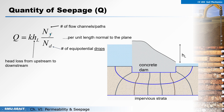One flow path is the space between two adjacent flow lines or streamlines. Nd is the number of equipotential drops. The first equipotential line from upstream represents the first drop, the next is the second drop, and so on until you reach the downstream side. The number of equipotential drops is numerically equal to the number of equipotential lines minus one.